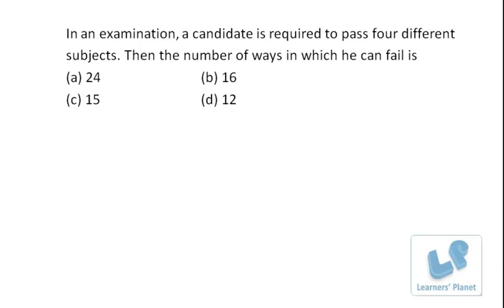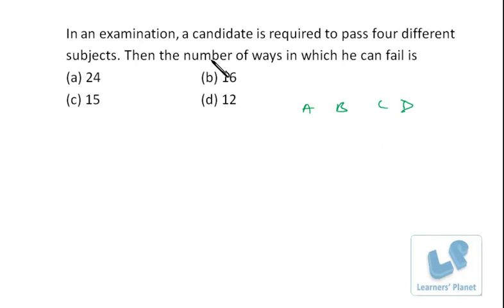In an examination, a candidate is required to pass four different subjects. The number of ways in which he can fail is what we need to find. There are various methods to approach this problem. Suppose there are four subjects: A, B, C, and D. The candidate has to pass all four subjects, so we need to count ways he can fail — meaning he fails all four, or three, or two, or one subject.